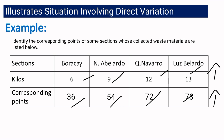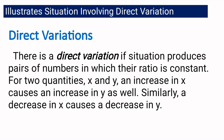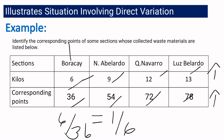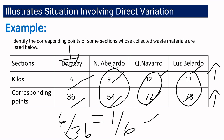An increase in one quantity means the other quantity will also increase. But this is not enough for us to say it is a direct variation. Another requirement is that the situation must produce a constant ratio. If we get the ratio of the two quantities, we have 6 over 36, which simplifies to 1 over 6. The ratio of the second pair, 9 over 54, is also 1 over 6. And 12 over 72 and 13 over 78 also have the same ratio of 1 over 6.